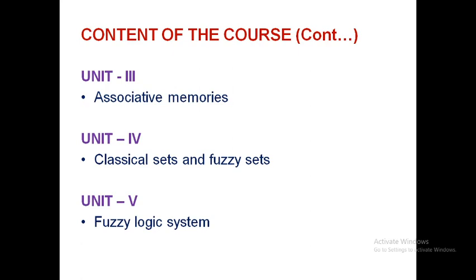In the fifth unit, the fuzzy logic system acts as a controller, similar to a conventional PI or PID controller where you adjust parameters. Here instead you give fuzzy rules to get the required output. Similarly, artificial neural networks are also like controllers. The fuzzification, de-fuzzification, and fuzzy rules are set to get the required output — more rules generally give more precise output.